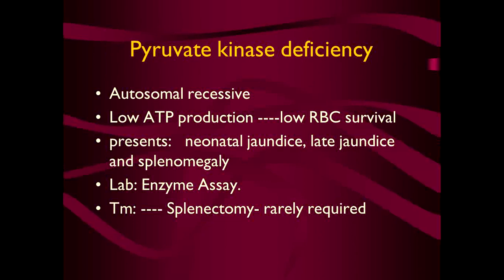Pyruvate kinase deficiency anemia is another enzyme defect — an autosomal recessive disorder with low ATP production. RBC survival is poor and the patient presents with neonatal jaundice in early life, though late jaundice may also be found, and the patient may have splenomegaly along with jaundice. The lab test is enzyme assay and treatment is splenectomy, which is sometimes required.